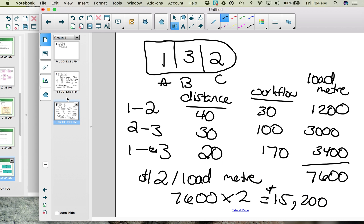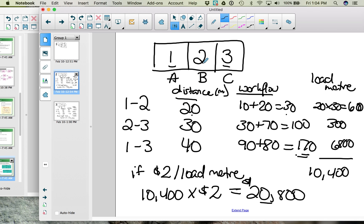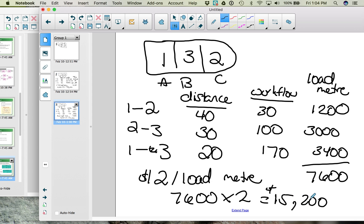We can see by changing the locations of our different departments, we've gone from costing our business $20,800 for all the movement of people and materials. And now the cost is $15,200. So we can use the block diagramming or the minimizing total transportation cost method to allocate departments to locations within our facility when we have a process layout.